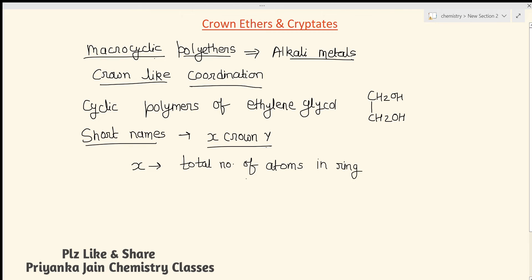In the x-crown-y naming format, y means the total number of oxygen atoms in the ring. When we know both these numbers we can name any crown ether.